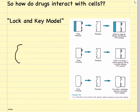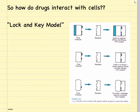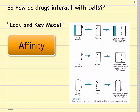Now let's look at the lock and key model, which describes how drugs interact with cell membrane receptors in order to exert their effects on the cell. In this model, drugs interact with only specific receptors, much in the same way a key will only fit with specific locks. The tendency of a drug to combine with its receptor is called its affinity.